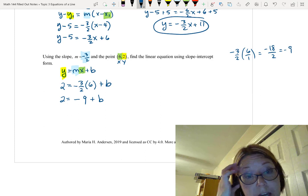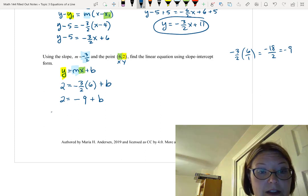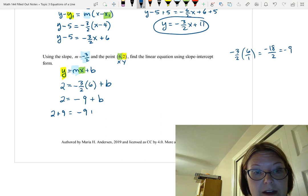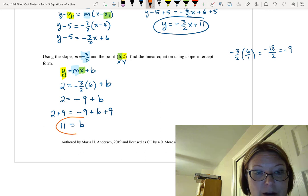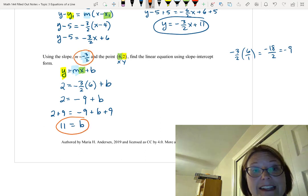And so to get the b by itself, let's just add 9 to both sides. So on the left we'll do 2 plus 9. On the right we'll do negative 9 plus b plus 9, giving us 11 equals b. Now that's not the equation, but it is the b value we were missing. And now we have both b and the slope, m.